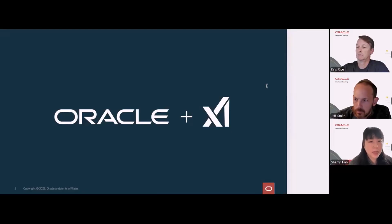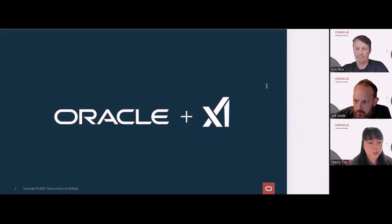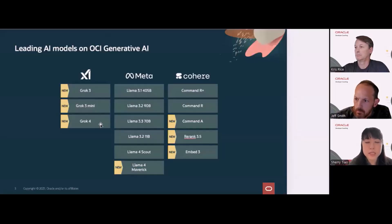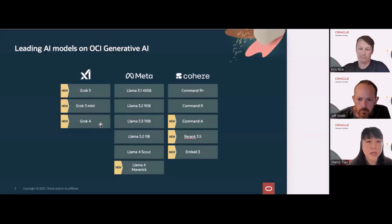In addition, accessing them through Oracle means you can continue to use the same cloud credits, the process is much more streamlined, and it becomes easier to use other Oracle offerings such as 23AI with your projects. We also recently added the Grok 4 model — XAI's latest — to the OCI Generative AI service. You can also see the other models and different versions by Meta and Cohere that we have added to keep things up to date for the OCI Generative AI service.